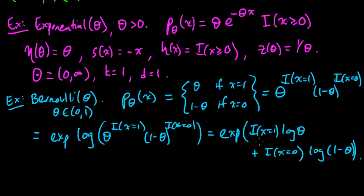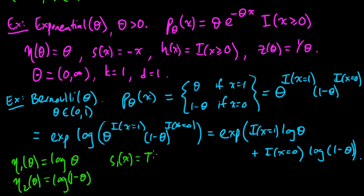Now we can identify the components: η₁(θ) = log(θ), η₂(θ) = log(1-θ), s₁(x) = I(x=1), s₂(x) = I(x=0), h(x) = 1, and z(θ) = 1.